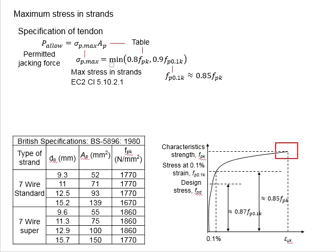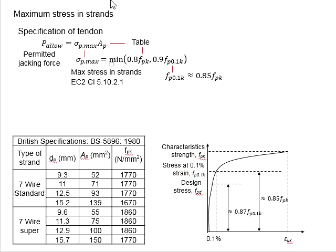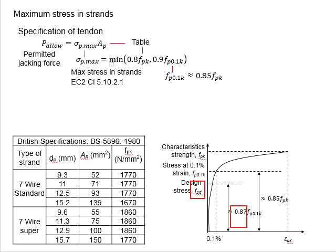FPK represents the highest strength that can be sustained by the tendon. The second is FP0.1K, which represents the yield strength of the tendon. Next is FPD, which is the design stress of the tendon. The relationship is that FP0.1K is about 85% of FPK, and FPD is about 87% of FP0.1K.